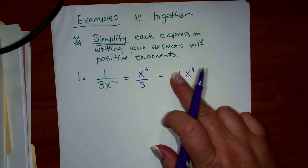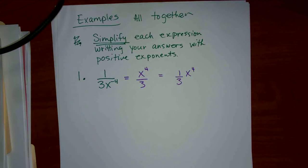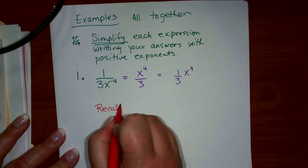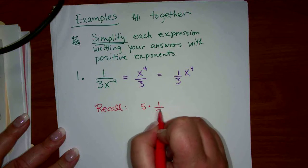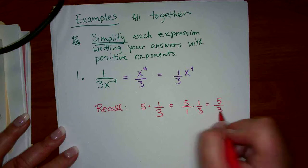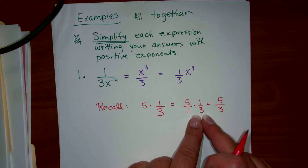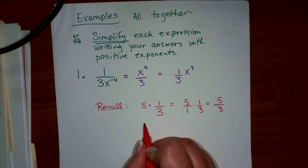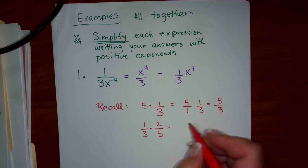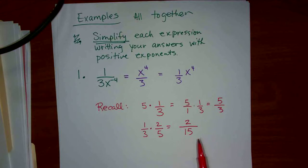Now in calculus you're going to want to write this a little bit differently — as 1 third times x to the 4. Do you agree that's the same thing? Remember when we multiply fractions: 5 times 1 third is the same as 5 over 1 times 1 over 3, which is 5 over 3. When you have two things that are multiplied, it's the same as writing it together as one fraction.